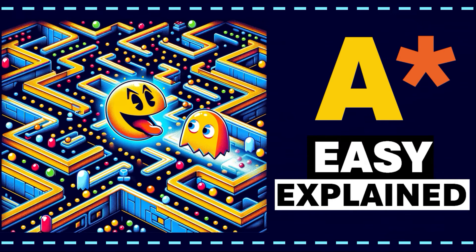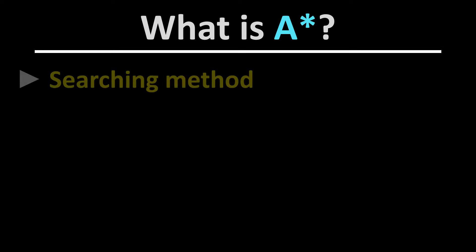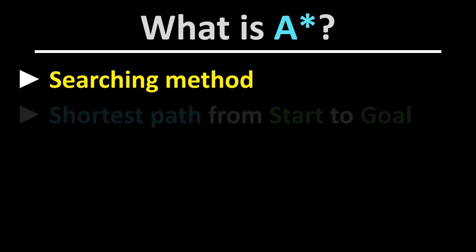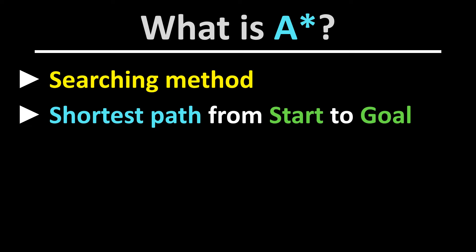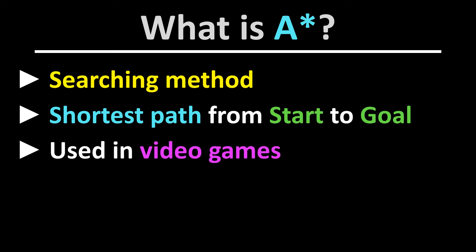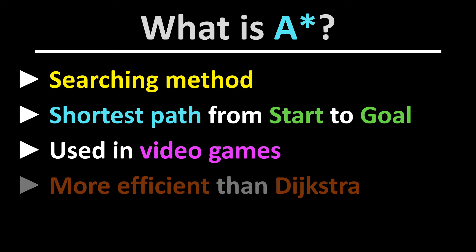The A-Star algorithm is a search method that aims to find the shortest path from a start node S to a target node Z in a graph. It is often used in video games, for example to program intelligent opponents that chase the player. A-Star attempts to be more efficient than similar algorithms such as Dijkstra's algorithm by using a heuristic method for the search direction.